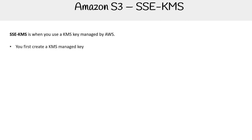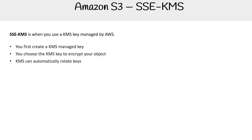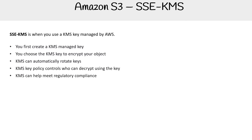You first need to create a KMS managed key, then choose that KMS key to encrypt your object. KMS is going to automatically rotate that key, so you still have great automation. You also have policy controls for who can decrypt using the key. KMS is really good for meeting regulatory compliance — specifically the FIPS protocol for storing keys, which is the protocol that really matters here.